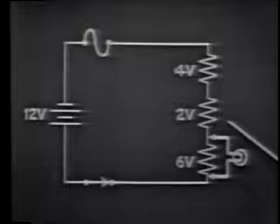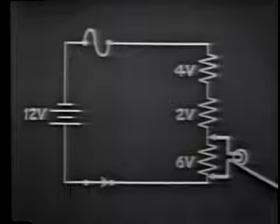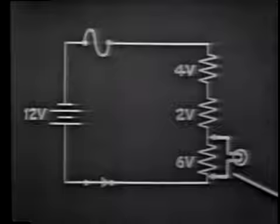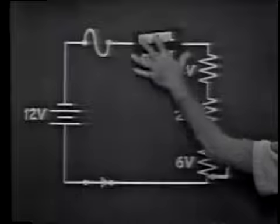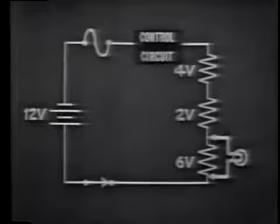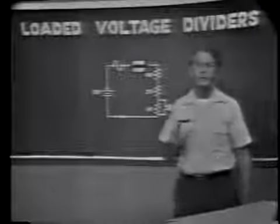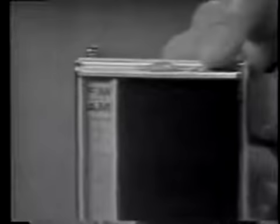The voltage change is caused by a decrease in total resistance, which allows total current to increase. To get accurate voltages, you must know the amount of load you're placing on the circuit. Special circuits are used to maintain a constant voltage under varying load conditions. The voltage divider is one of the most versatile and commonly used circuits in electronics, found in equipment ranging from a small transistor radio to the most complex computer.